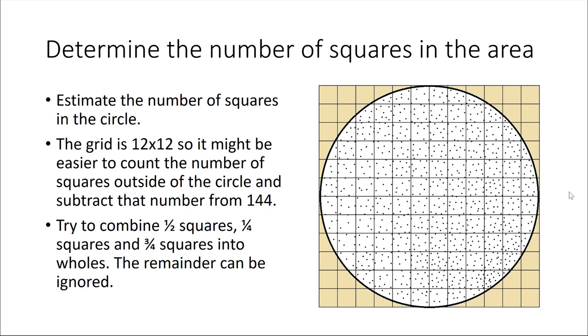Instead of counting all the squares within the circle, we could count the squares outside of the circle and simply subtract that number from 144 to get an estimate of the number of squares that make up the circle.